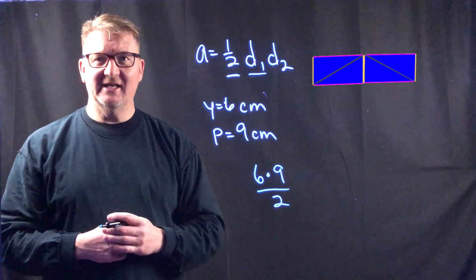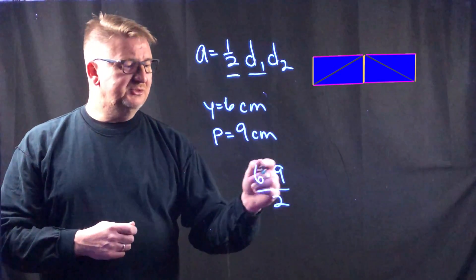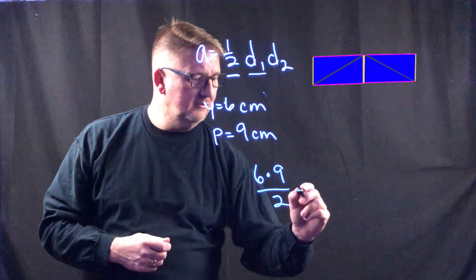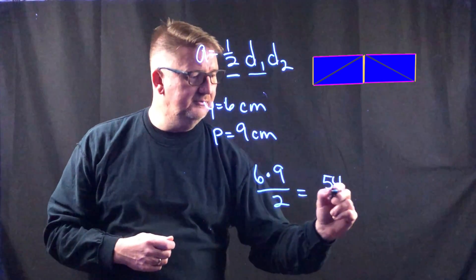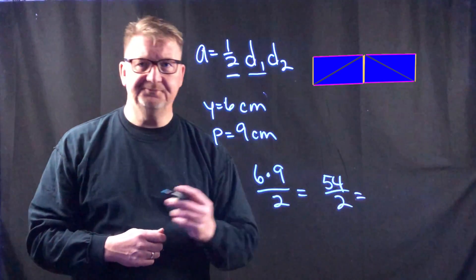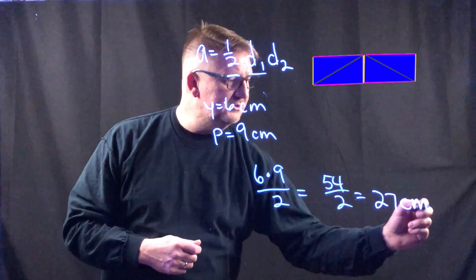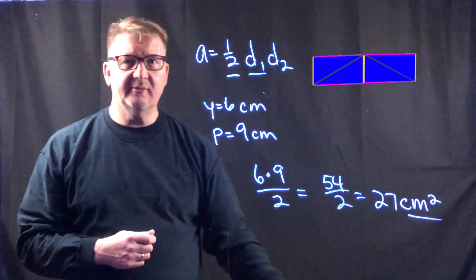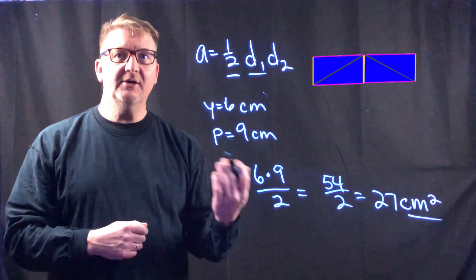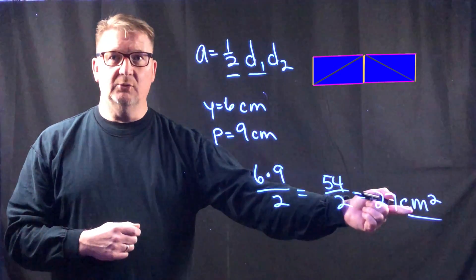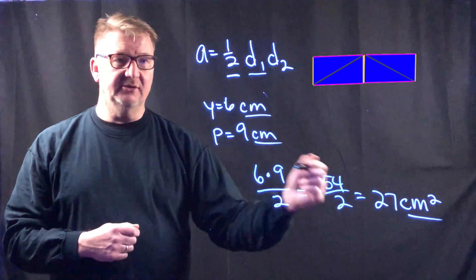So 6 times 9 is 54, divided by 2, and my final answer is going to be 27 centimeters squared. Always remember to express your answer in an area problem as whatever the unit may be, in this case centimeters squared.